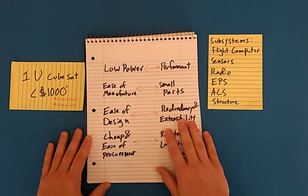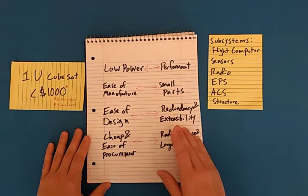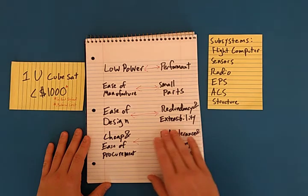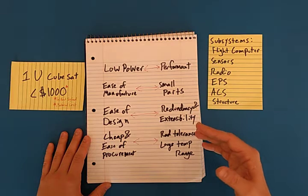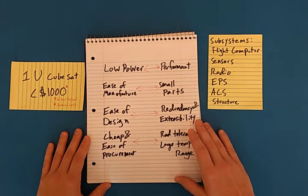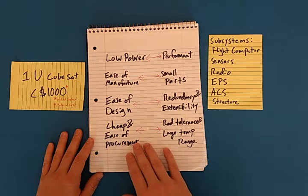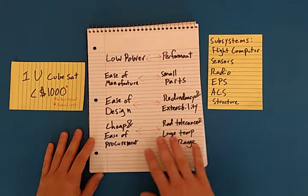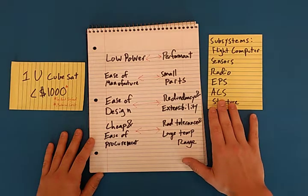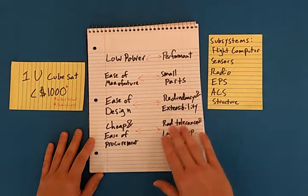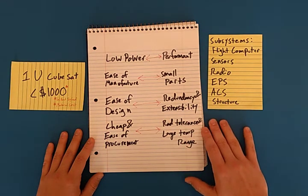Ease of design versus redundancy and extensibility. The simpler the design, the easier it is to design and build and make. While you want to have more redundancy, you want to be able to add on to this later. And most importantly for the design constraint I'm working in, cheap and easy to procure lines up right against radiation tolerance and having parts that have a large temperature range. If you want either of these, usually the price goes up, especially with the radiation tolerance.